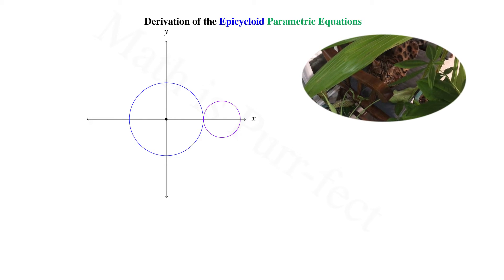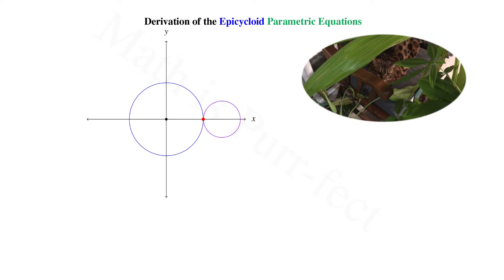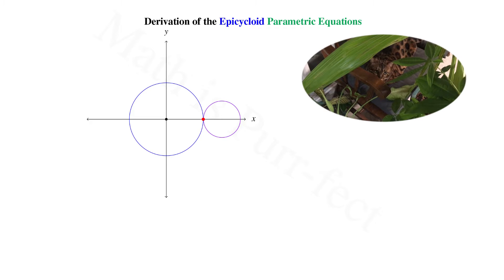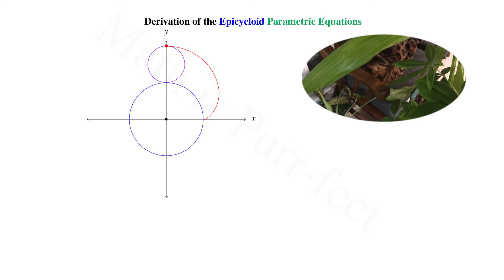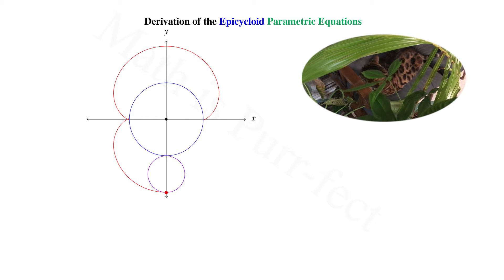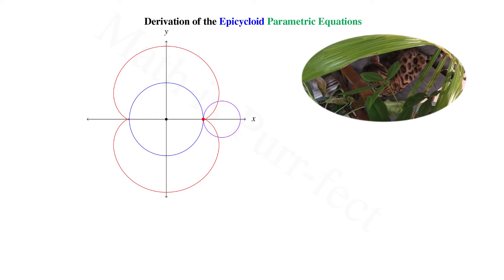We annotate the point where these two circles meet in red. This point is fixed with respect to the outer circle and moves along with it in concert. So as the outer circle rolls along the circumference of the inner circle, that red point will trace out a curve known as an epicycloid curve.